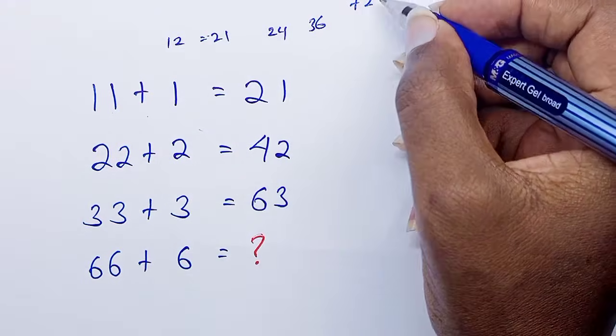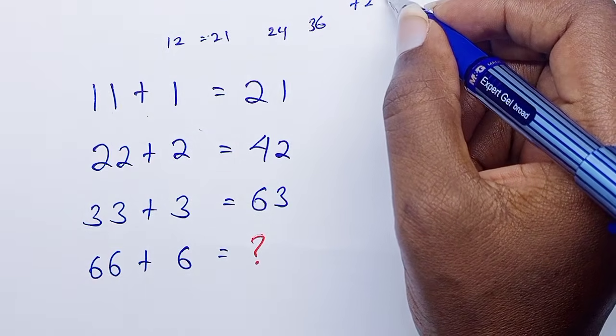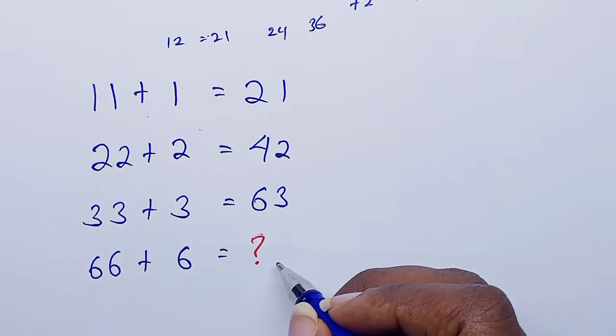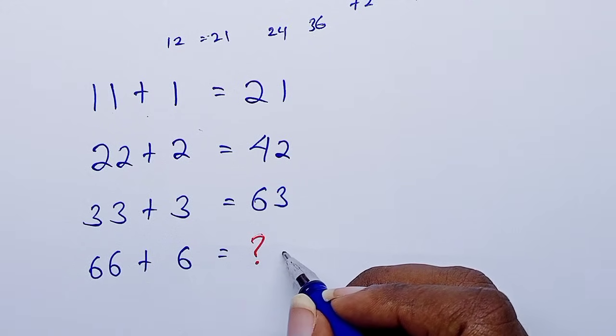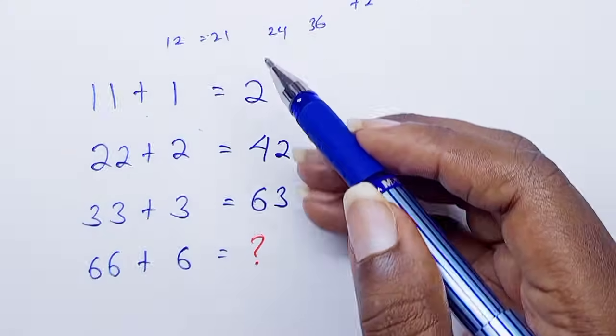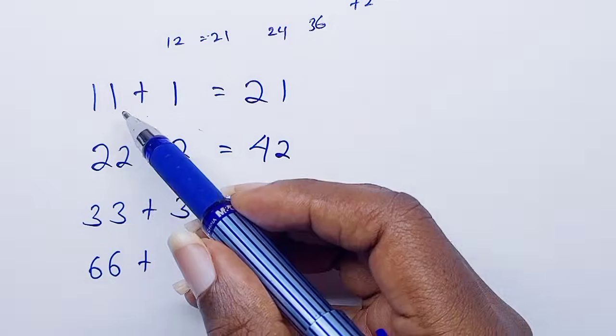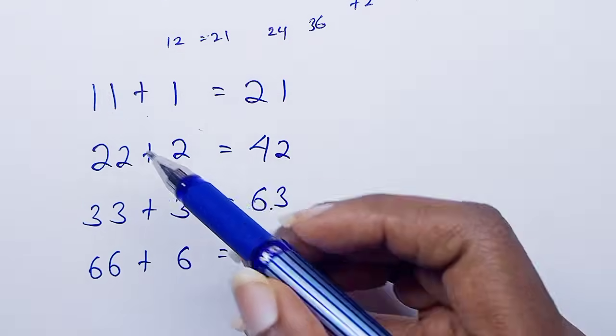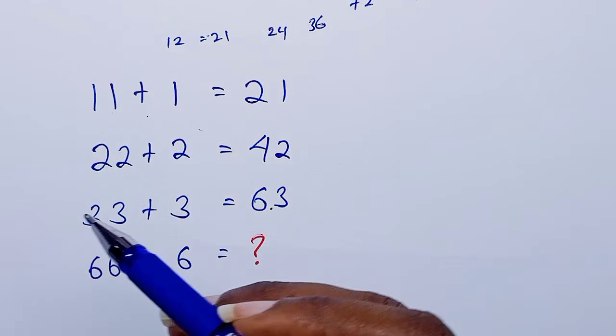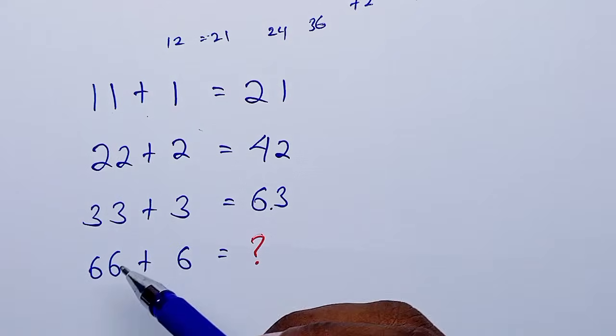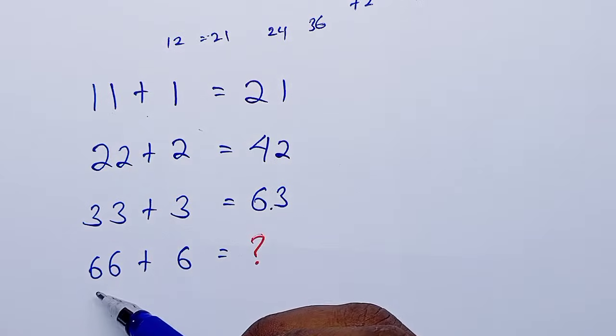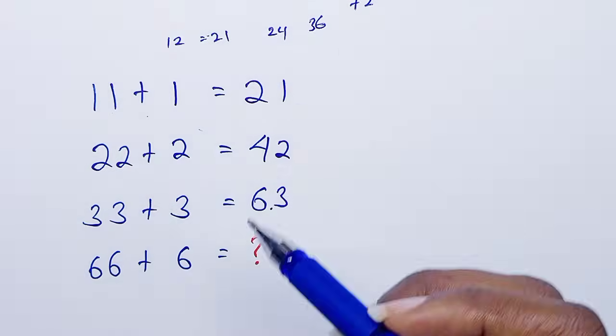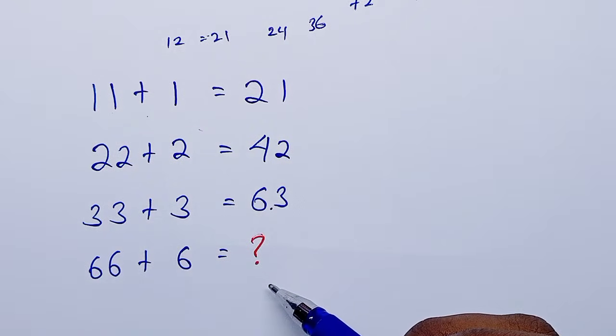And then you're tempted to write 27 here. But the reason why 27 cannot work here is because these numbers are increasing as the numbers on the left are also increasing. So you cannot tell me that this is 21, 42, 63, and then 66 plus 6 is 27. That cannot be right.